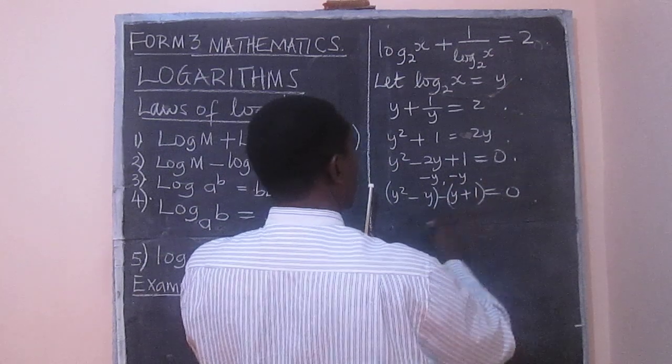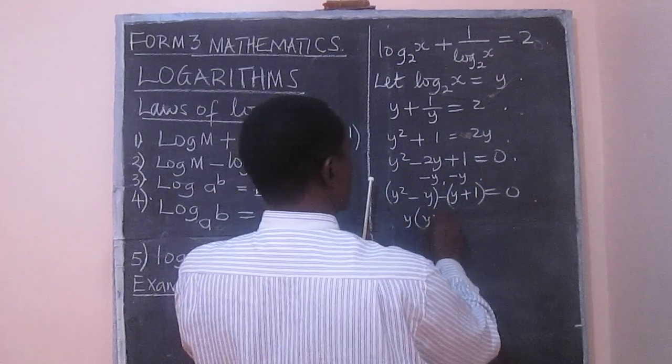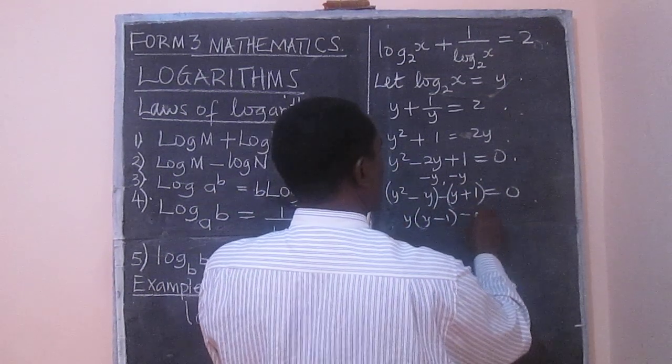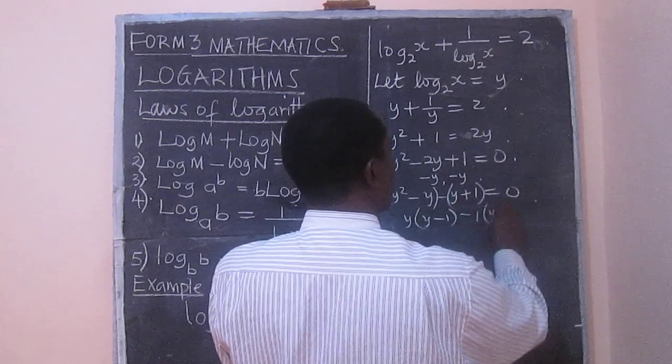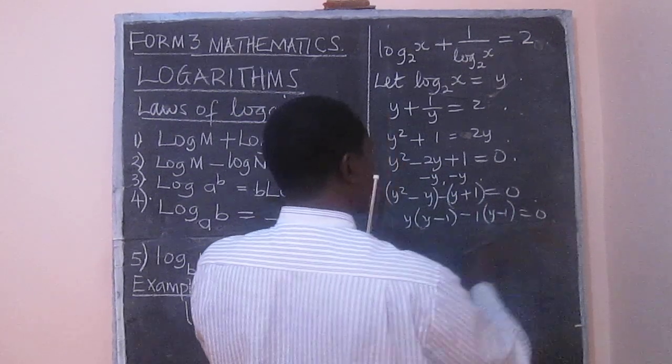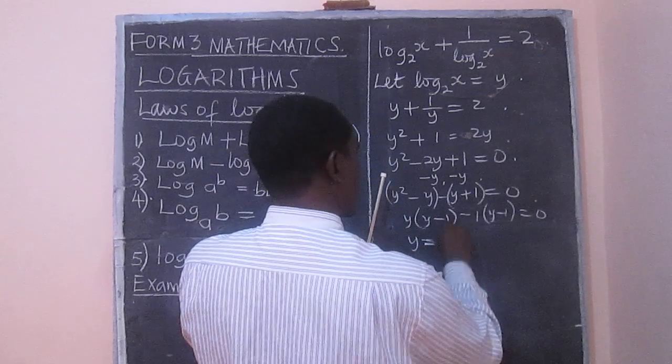And when we group this, we get y into y minus 1 minus 1 into y minus 1 equal to 0. And therefore, y is 1.